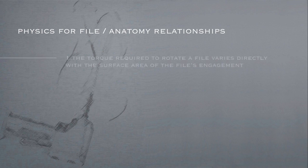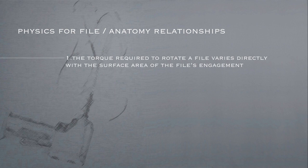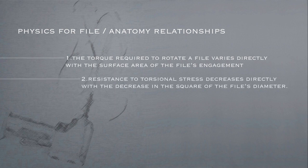So what are the physics for file anatomy relationships? One, the torque required to rotate a file varies directly with the surface area of the file's engagement. Two, resistance to torsional stress decreases directly with the decrease in the square of the file's diameter.